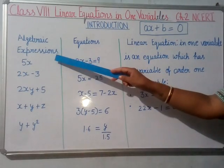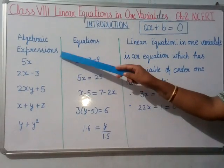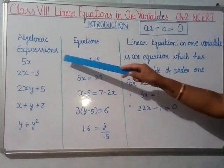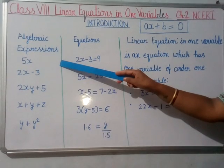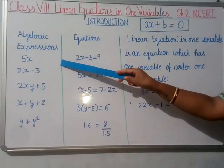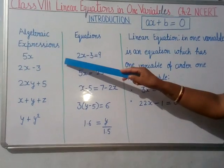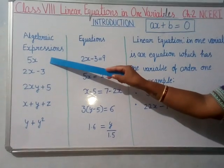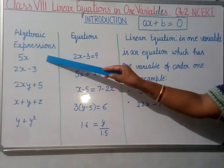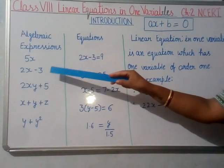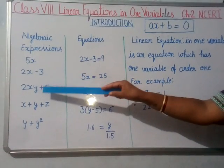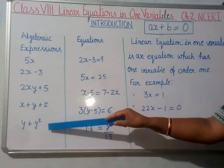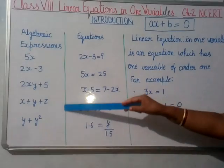First, we have to know what are algebraic expressions. Algebraic expressions are formed by constant variables and by some mathematical operations: addition, subtraction, multiplication or division. Here 5x is formed by multiplying 5 and x. Then 2x minus 3, 2xy plus 5, x plus y plus z, y plus y square. These are some examples of algebraic expressions.